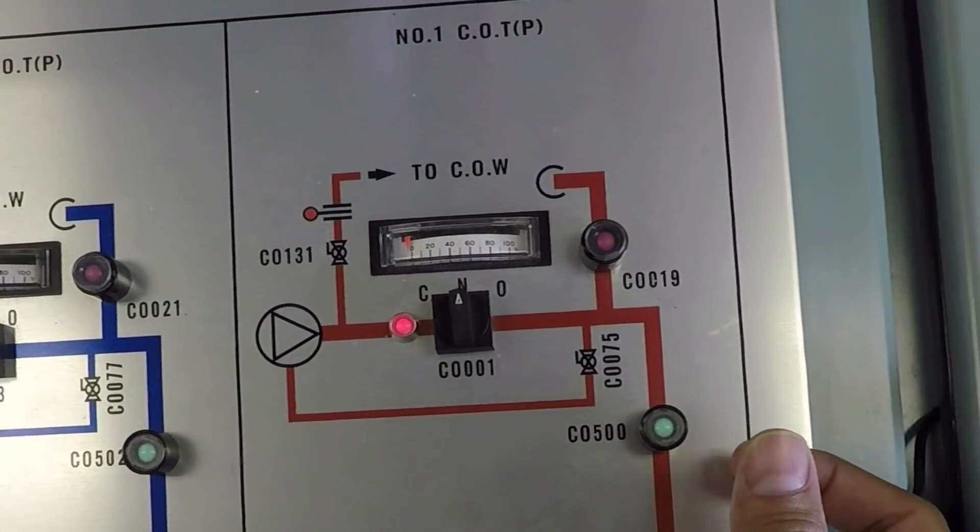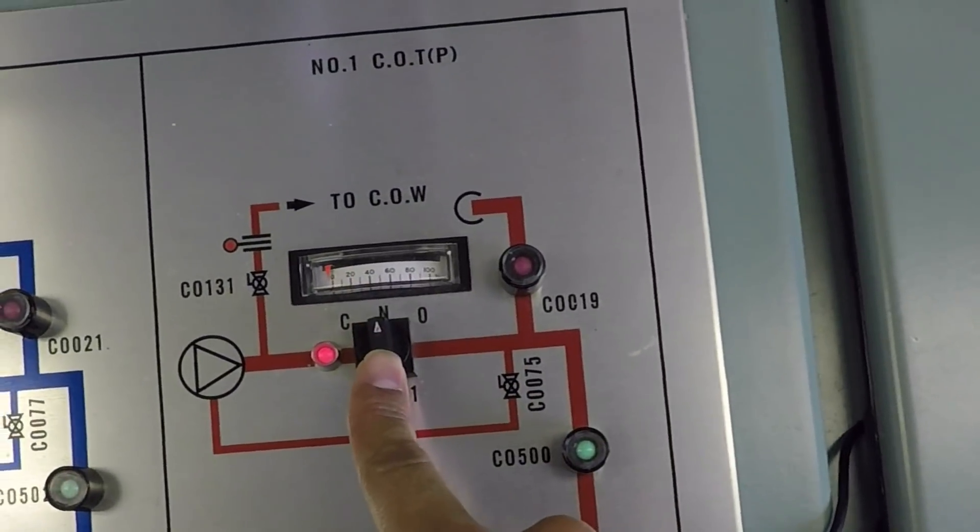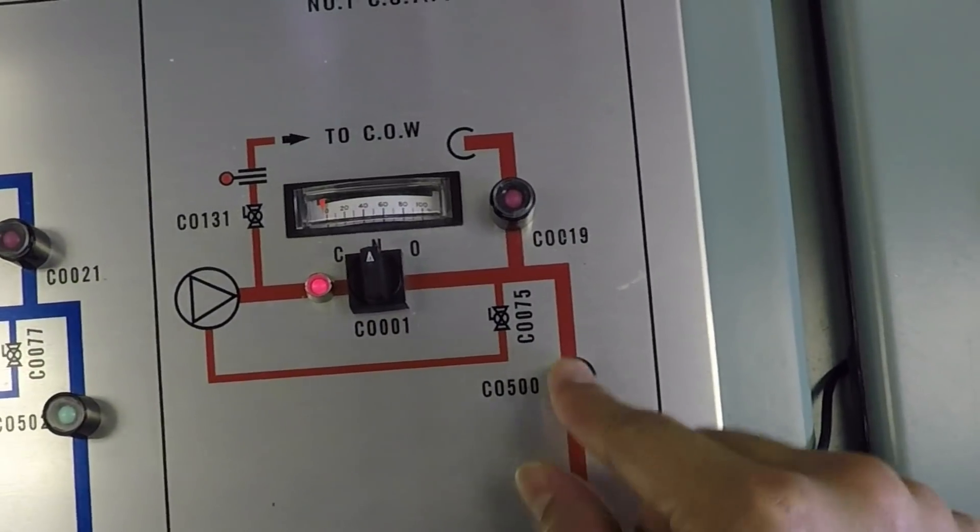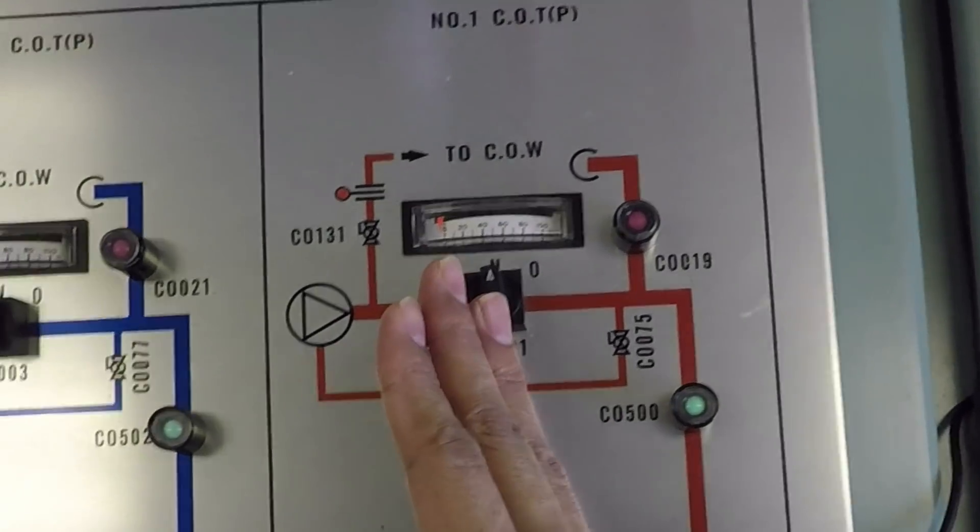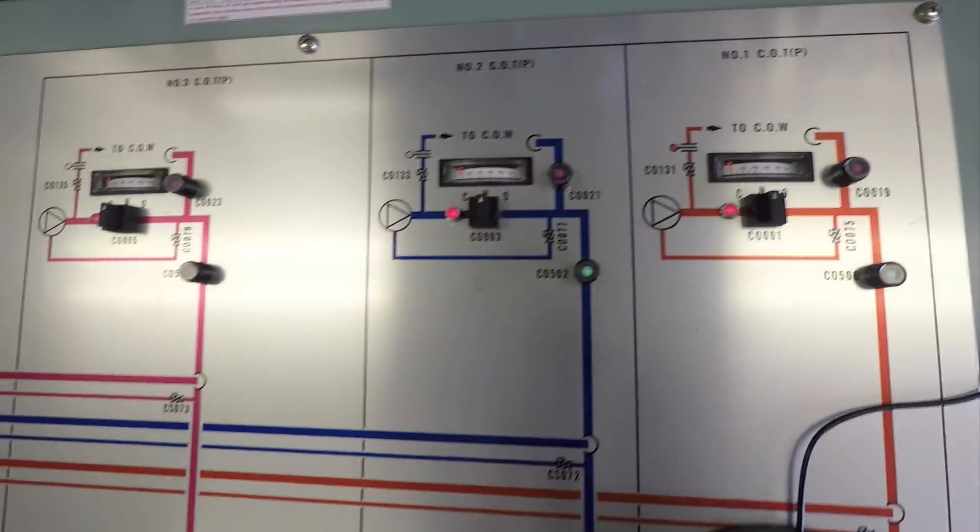And this valve is a throttling valve, which is a hydraulic valve, and these are the manual valves. This has a discharge valve as well as the drop valve. This system is on all the tanks.